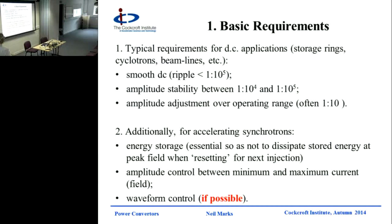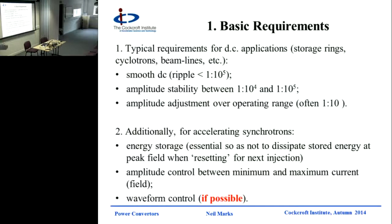And then for synchrotrons, where we are oscillating and changing the field level in the dipoles and in the quadrupoles, we need to have energy storage, because when the magnets have got high flux density, they've got energy - they're storing work - and when they come back down again, it's got to go somewhere. And then we need to control the amplitude between minimum and maximum current, which is the field. And if at all possible, in a cycling accelerator, it would be very nice to have control not just of the amplitude at the top and the bottom, but also of the waveform - where it goes from A to B. It's no good just knowing the way from London to Brighton; you need to know which route you take.